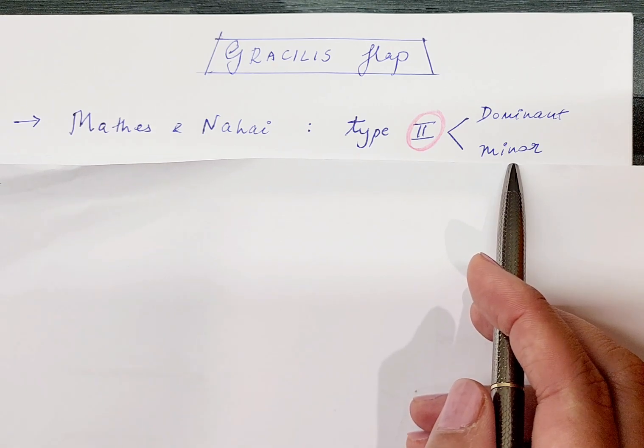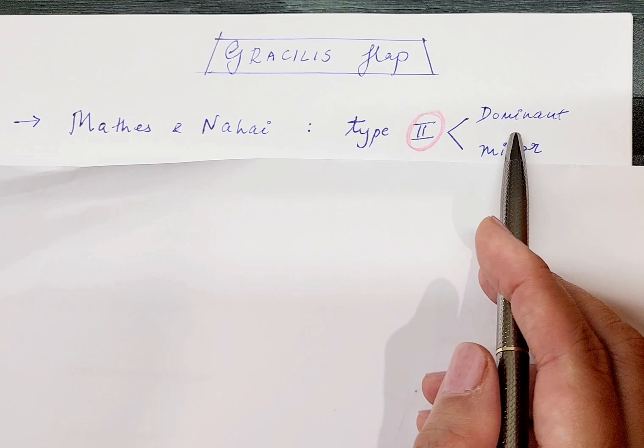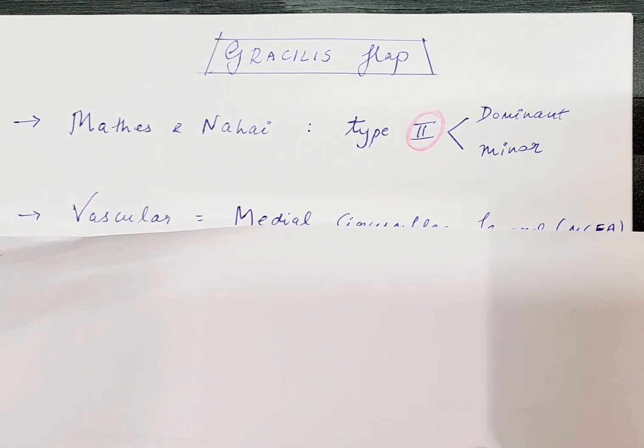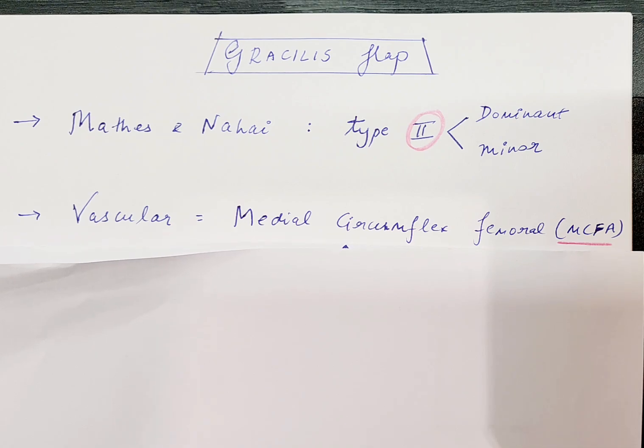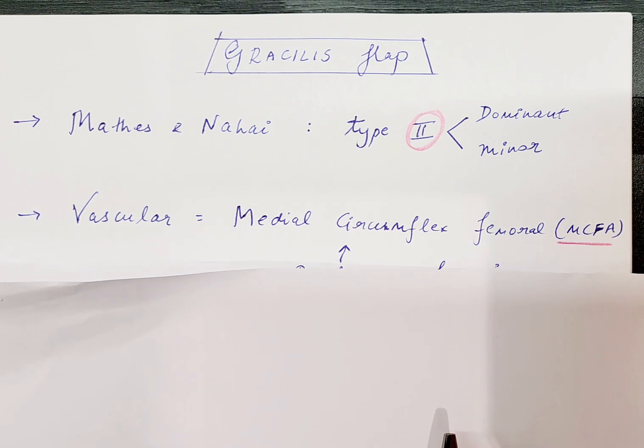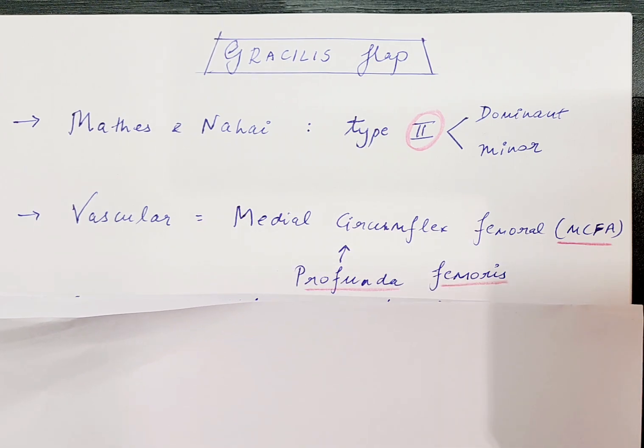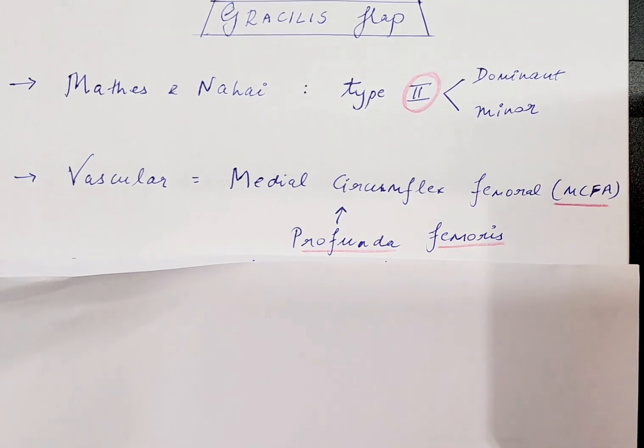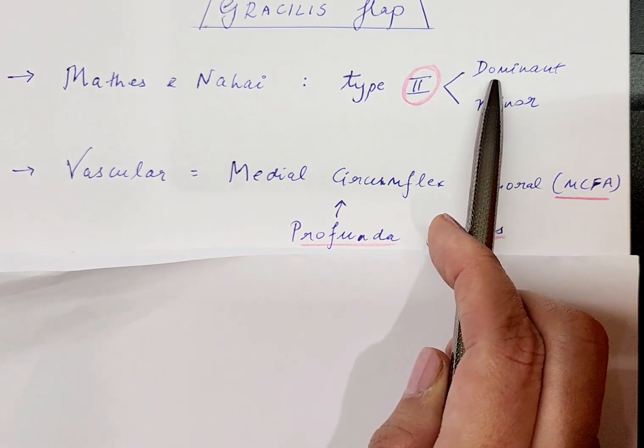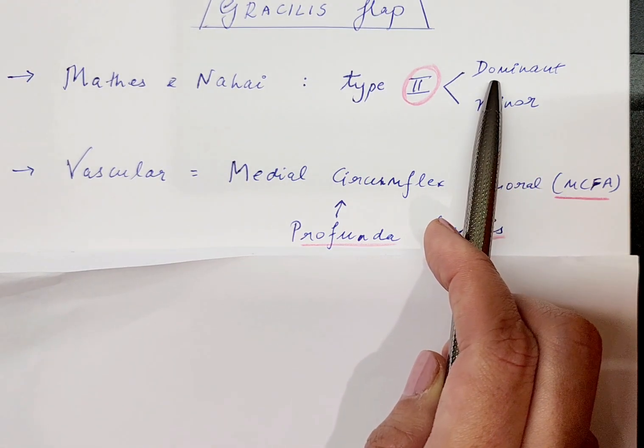Now where does this dominant pedicle come from? The vascularity of this flap is based on the MCFA, that is the medial circumflex femoral artery, which is a branch of the profunda femoris. Some authors also believe that there is an adductor branch which supplies the gracilis muscle, but most commonly documented is the MCFA, which is considered to be the dominant supply of the gracilis flap.